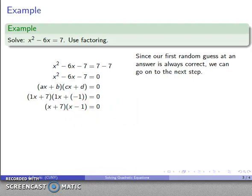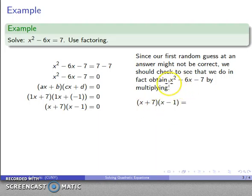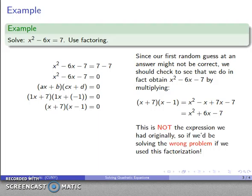Because our first random guess at an answer is always the correct one, we can immediately go on. Well, actually, our first random guess might not be what we need. We do need to verify that this expression factors as x plus seven times x minus one. Multiplying those out, I find I get x squared plus six x minus seven, which is not what I wanted — I wanted x squared minus six x minus seven. So if I proceed from here, I'm solving a different problem and will get the wrong answer.